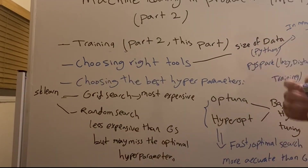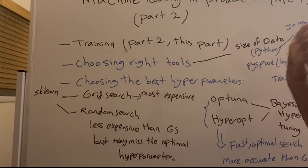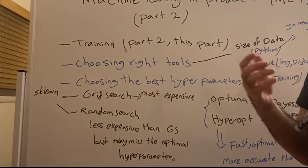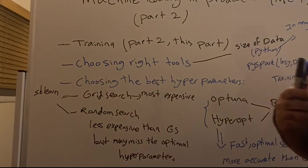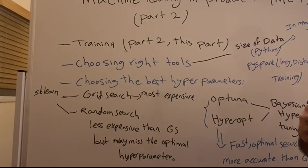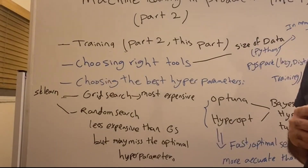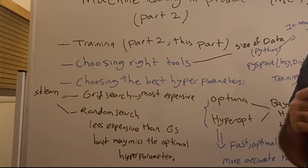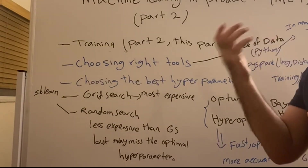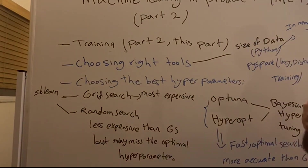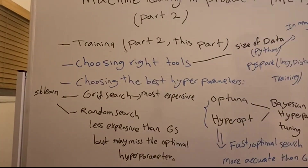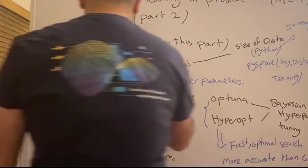Once you choose the best hyperparameters and train the model, what do you do next? In a production environment, you don't expect training and testing to happen at the same time. Maybe you want to train today and test or predict tomorrow. So you need a place to store your hyperparameters.